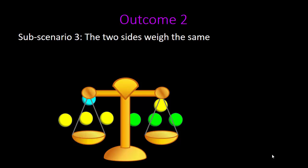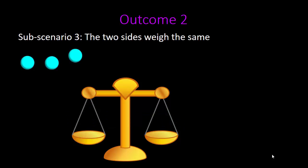And finally, we have sub-scenario three, where the two sides weighed the same. Recall that we still have three blue marbles that we did not include in our weighing. If our chosen ones weigh the same, it means the oddball is one of the remaining blue marbles. Again, we weigh two of them against each other. If they don't weigh the same, then the heavier of the two is irregular. If they're balanced, then the oddball is the remaining unweighed blue marble.